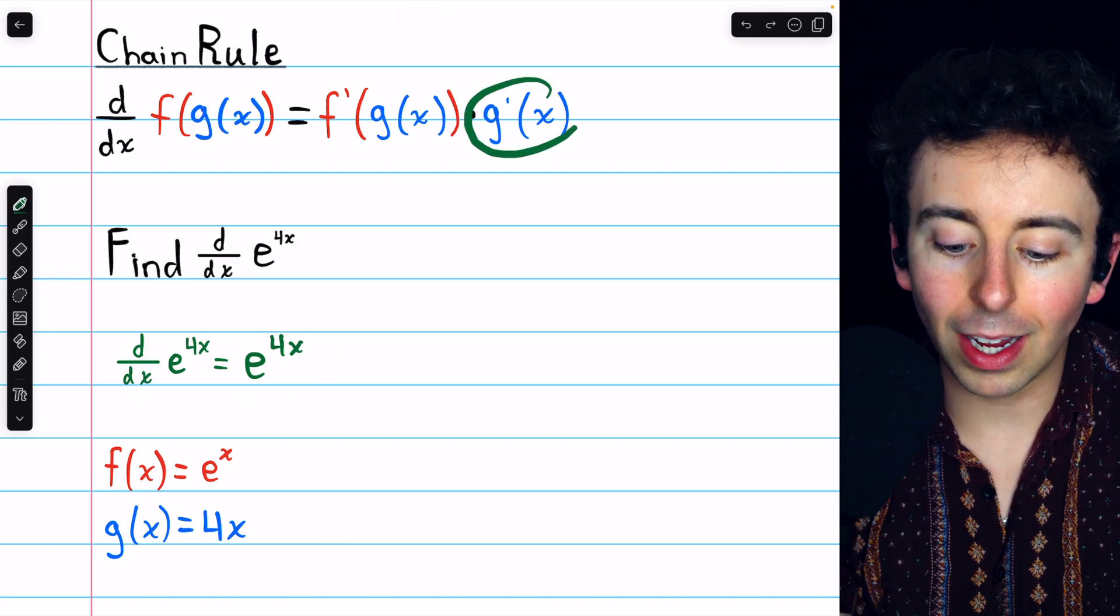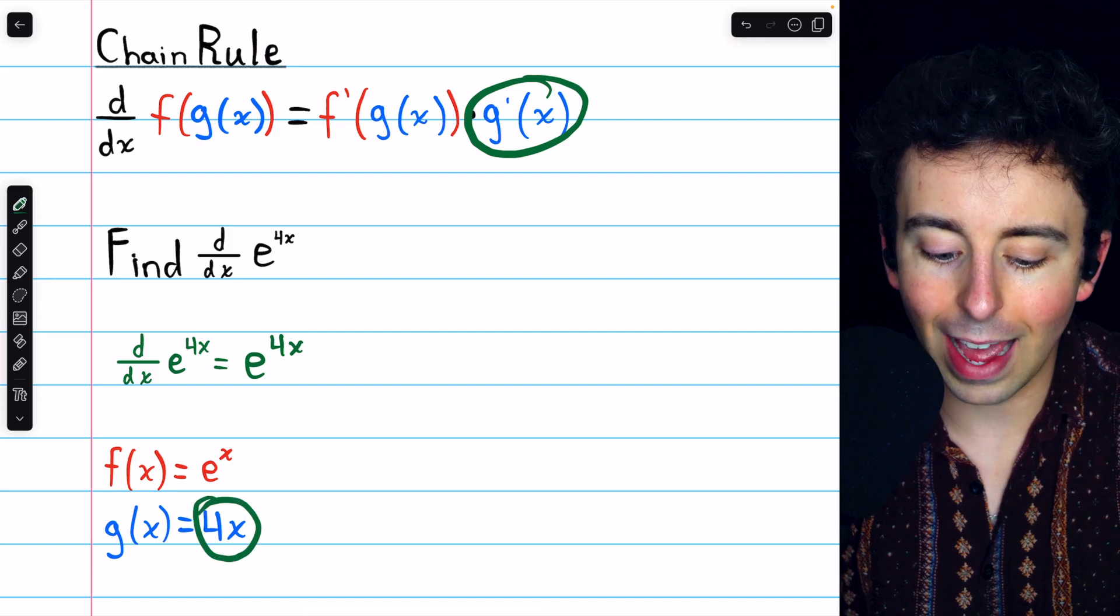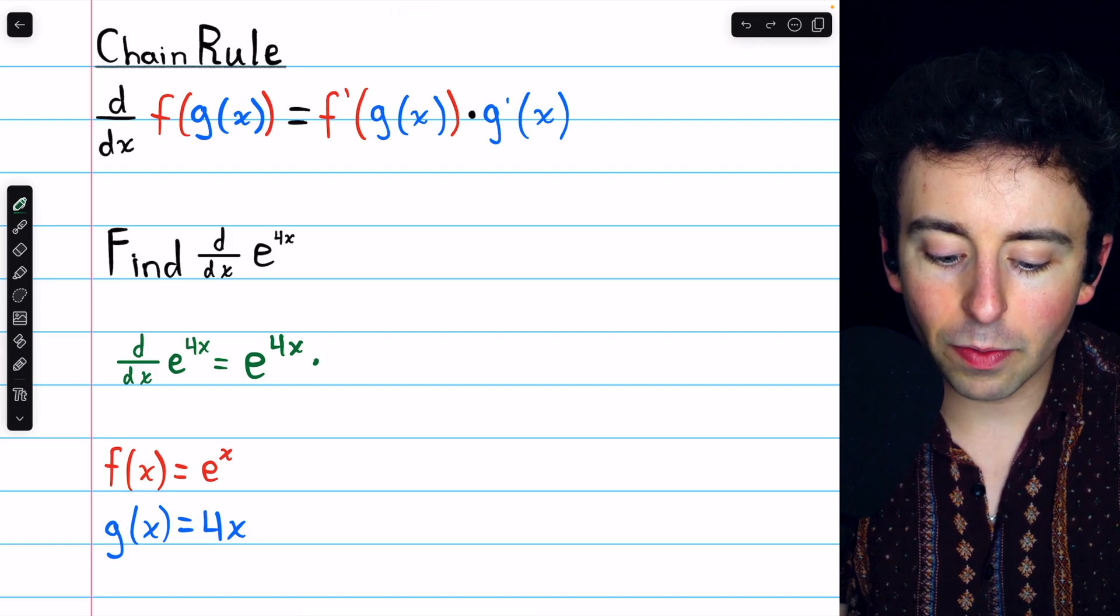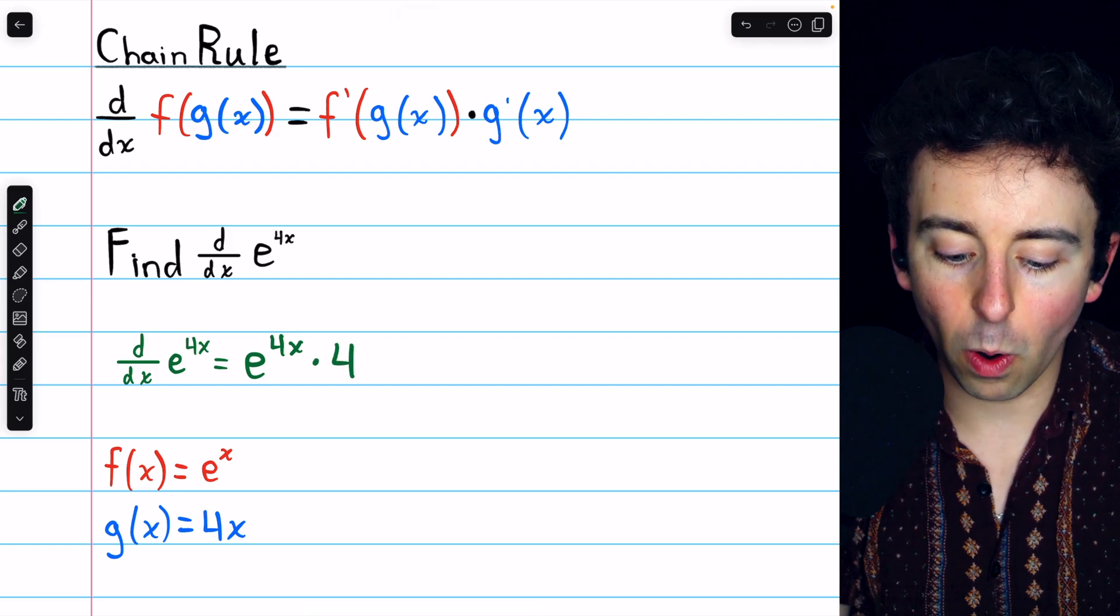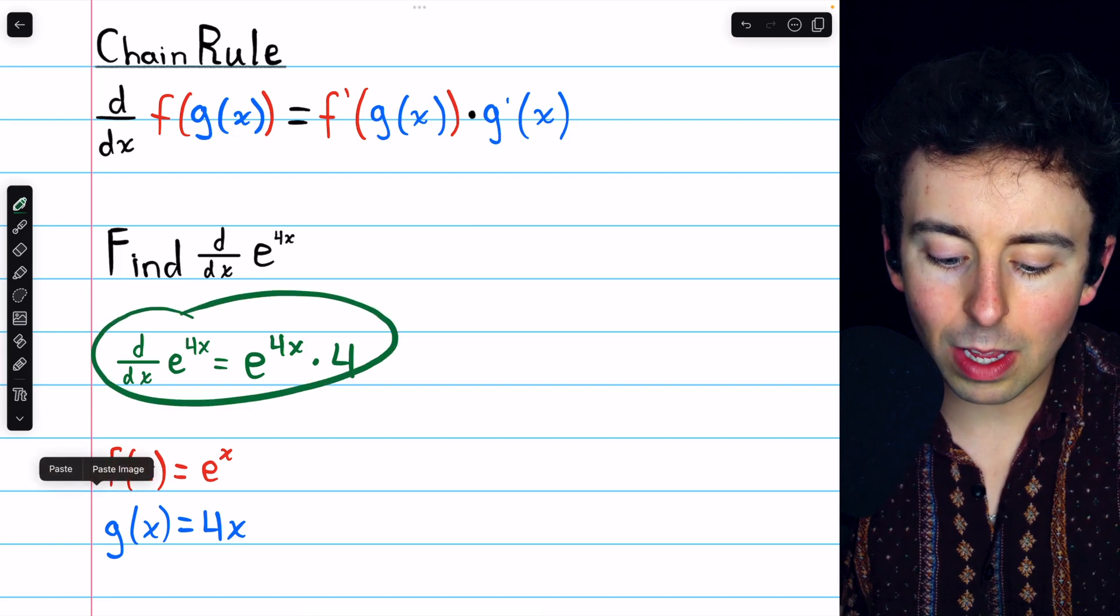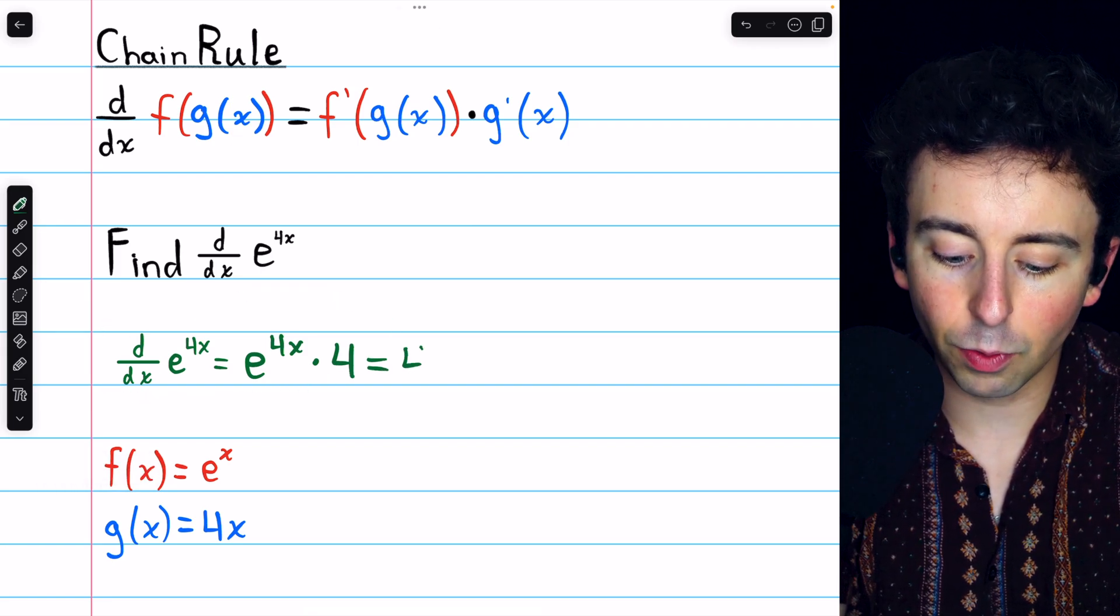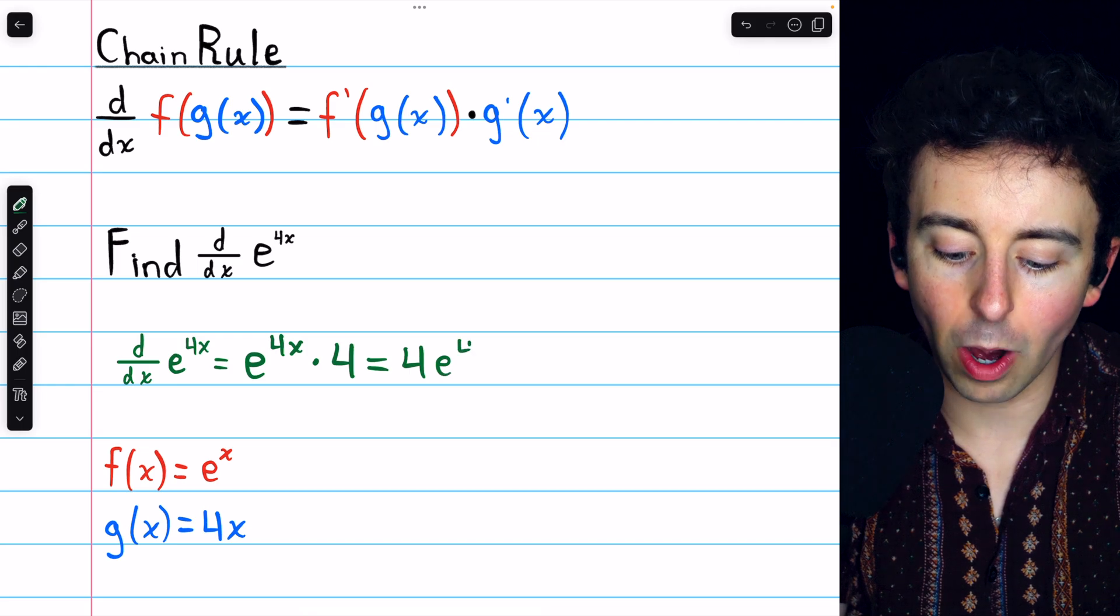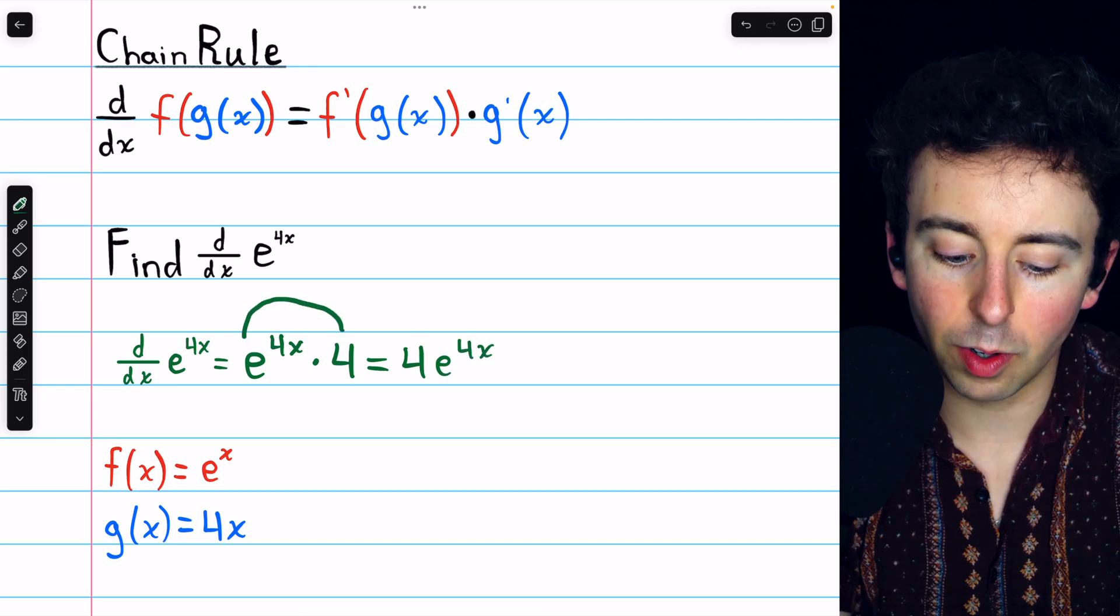But then we must multiply by g prime, the derivative of that inside function. The derivative of 4x is just 4, so this is our derivative, which we may prefer to write as 4e to the 4x, just moving that coefficient in front.